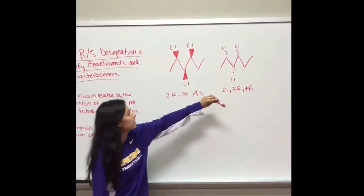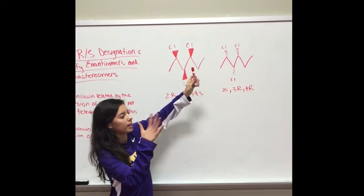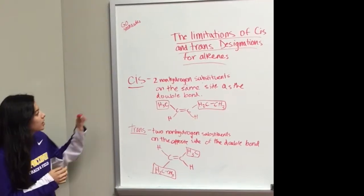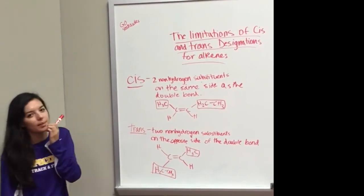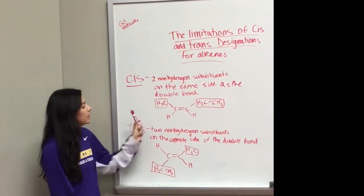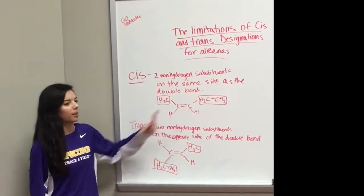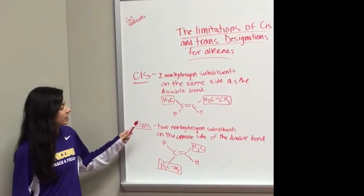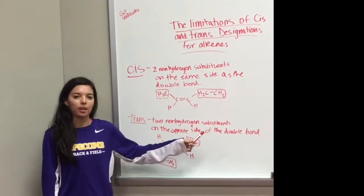Cis has two non-hydrogen substituents on the same side of the double bond. Trans has two non-hydrogen substituents on the opposite side of the double bond.